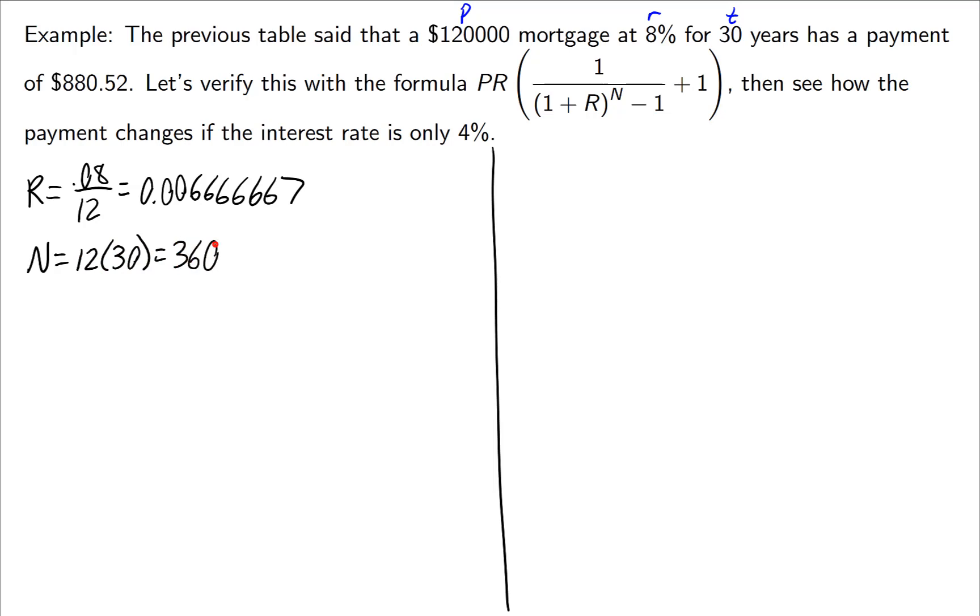Now let's go into the formula. 120,000 times that r value. Let's just put a few digits in here. And then we've got this guy: 1 over (1 plus this r value raised to the N) minus 1, plus 1. It looks daunting, but let me take you through the steps.